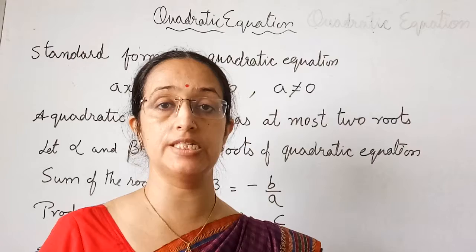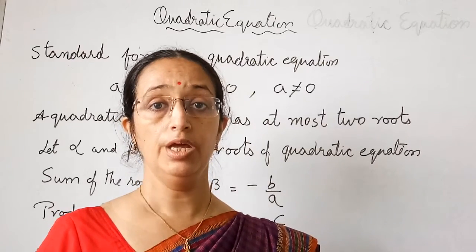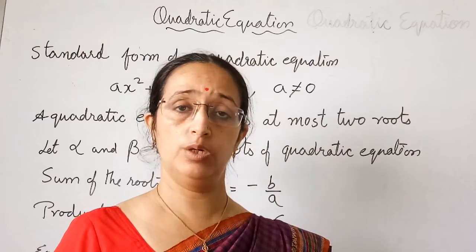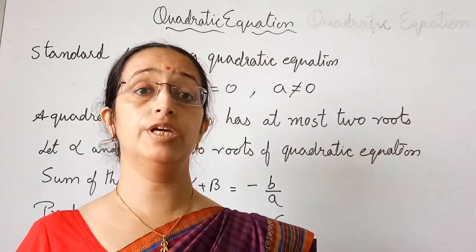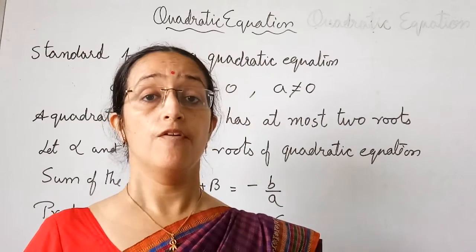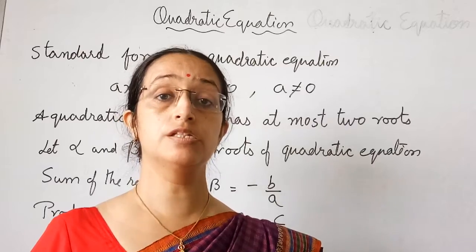In general, we can say a polynomial with degree 2 equating to 0 is our quadratic equation. A quadratic equation is an equation where the variable has highest degree 2.